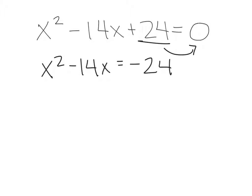The next part, to complete the square, you have to take half of b, which would be negative 7, and square it, which equals 49.